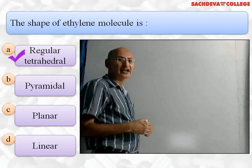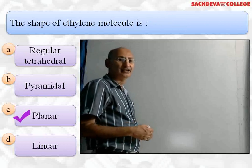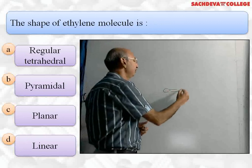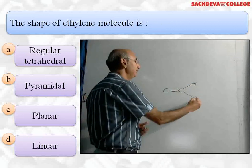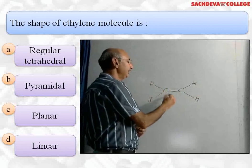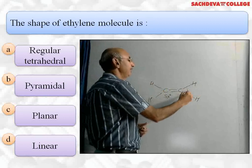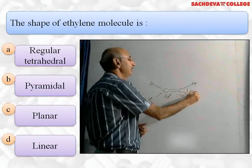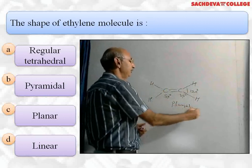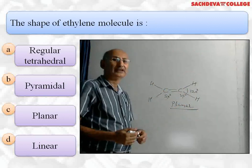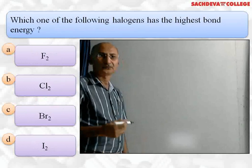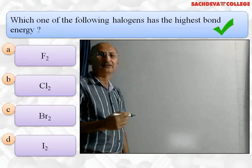Next question: what is the shape of the ethylene molecule? Options are regular tetrahedral, pyramidal, planar, or linear. In the ethylene molecule, each carbon is sp² hybridized with a bond angle of 120°, so the shape of the ethylene molecule is planar. The correct answer is (c) planar.